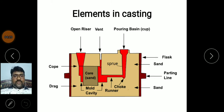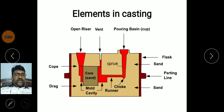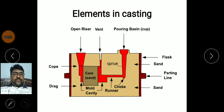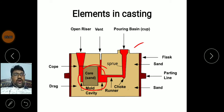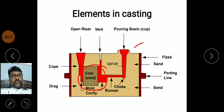Coming to elements in casting, there are different elements. Mainly it consists of two flasks: the drag box and the co-box. We place the pattern inside, and after making the mold we remove the pattern. In some cases we use core material for making hollow objects. The pouring basin is the topmost object of the molding flask; it is used to pour the molten metal.